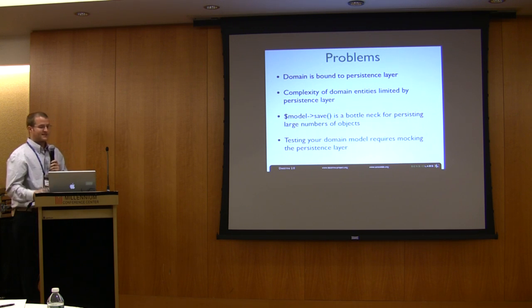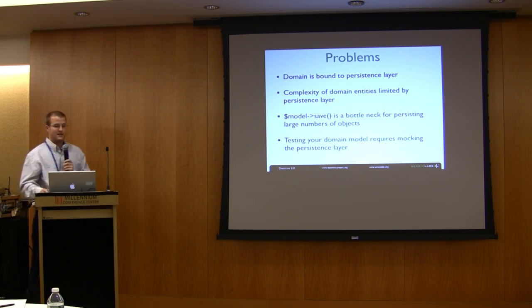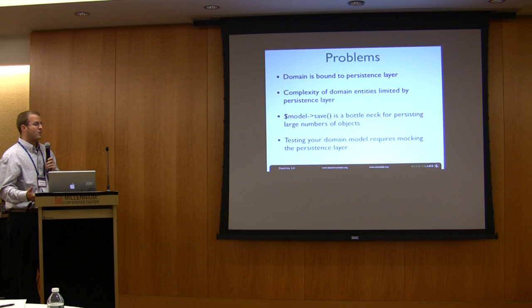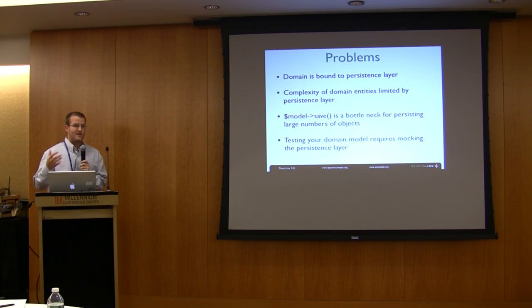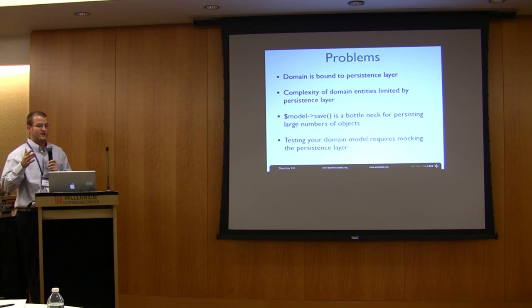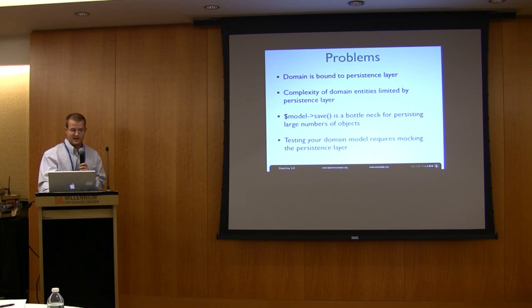Also, being bound to the persistence layer, the complexity of our entities and our domain are limited by what the persistence layer allows us to do. The save and all those magic methods that are added to your domain entities, it seems great and all, but there's a lot of overhead. Save becomes a bottleneck if you ever want to persist large batches of entities. Because I have to call the save operation for every single entity. That means that I can't do batch inserts, batch updates, batch deletes. It requires me to issue one individual delete or save statement per entity.